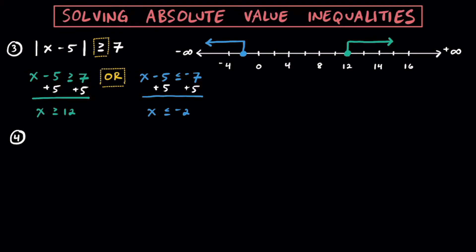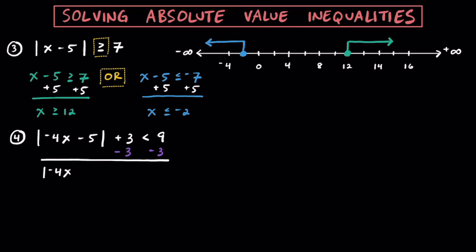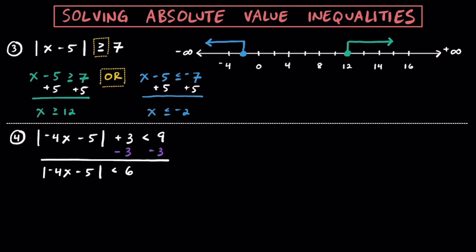For a fourth example, let's try the inequality where we have the absolute value of negative 4X minus 5, plus 3 on the outside, and the whole thing is less than positive 9. Before separating into two statements, the first thing we want to do is subtract 3 from both sides to isolate the absolute value symbol. Isolating it, we have the absolute value of negative 4X minus 5 is less than 6. Now that the absolute value symbol is isolated, we write our two separate inequalities: negative 4X minus 5 is less than 6, and because we have a less than symbol, this is an AND compound inequality. For our second statement, negative 4X minus 5 is greater than negative 6.